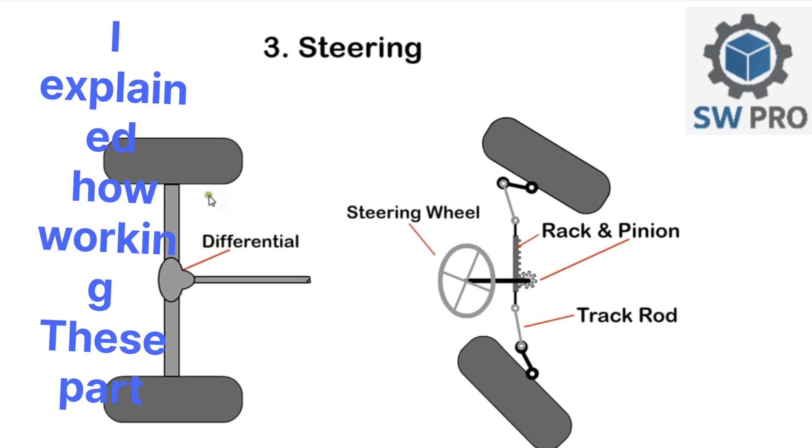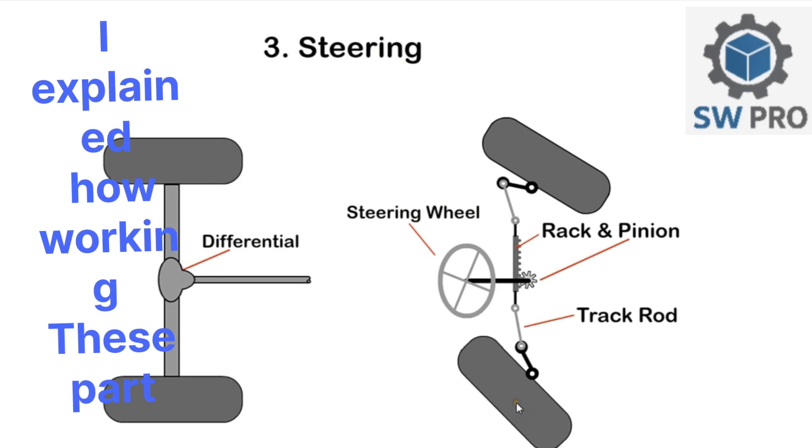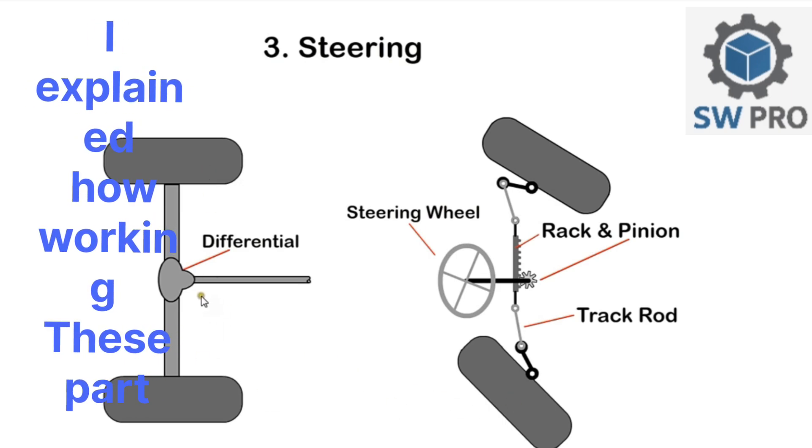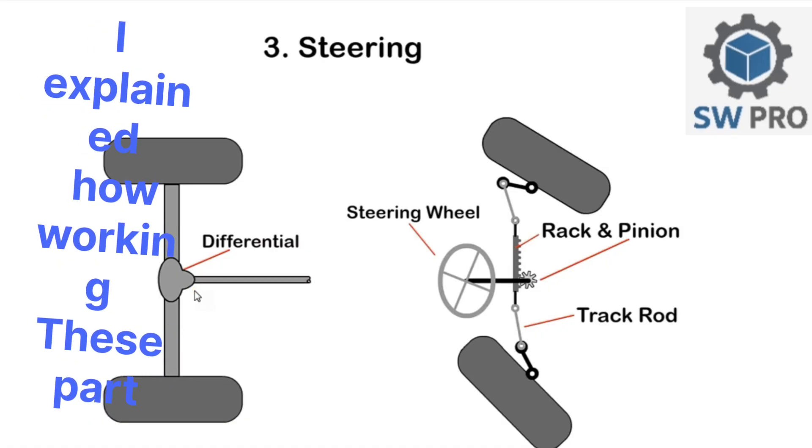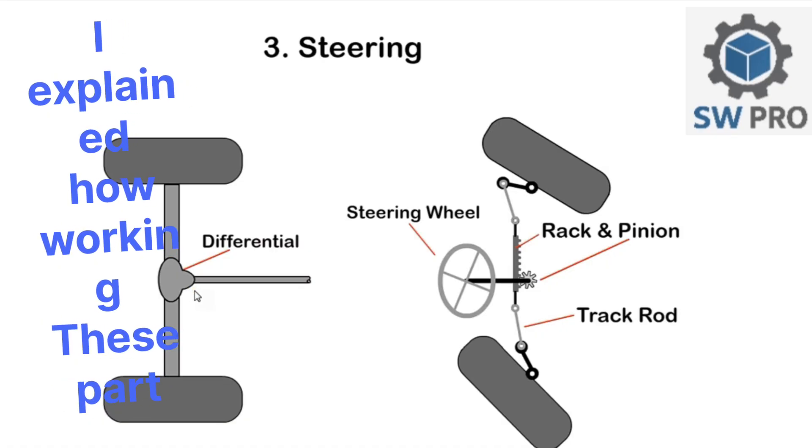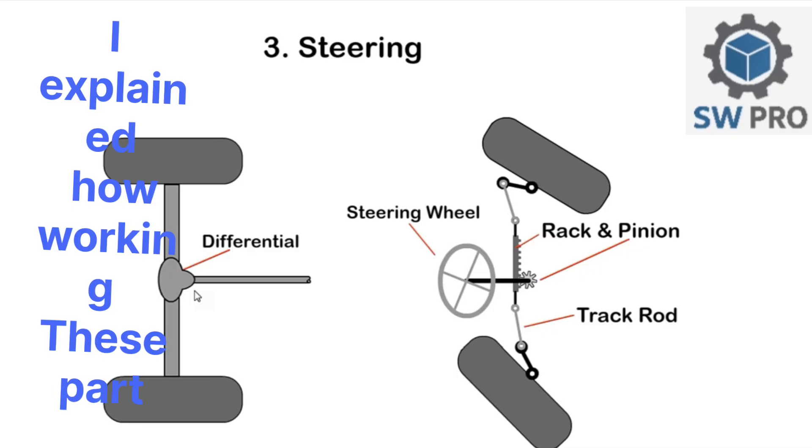Also, the outside wheel must travel a longer distance than the inside wheel. On a rear wheel drive car, the differential in the back axle allows for the difference in speed.